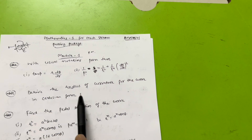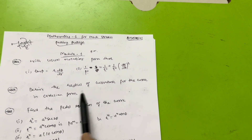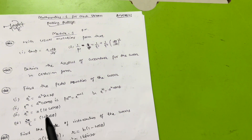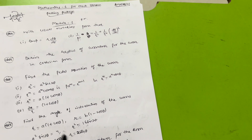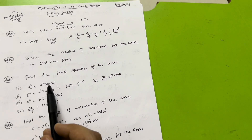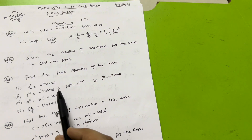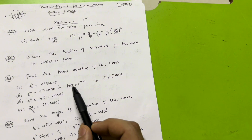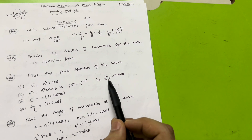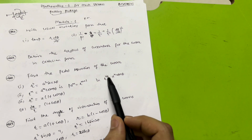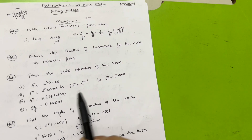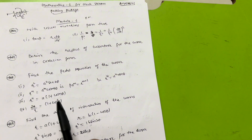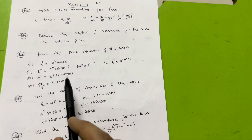Next important: derive the radius of curvature for the curve in Cartesian form. Next, we have the concept of pedal equations, on which you have to practice these four varieties: r² = a² sec 2θ, r^m = a^m cos(mθ) — show that the pedal equation is p·a^m = r^(m+1). Also find the pedal equation for r^n = a^n cos(nθ) and r^n = a(1 + cos nθ), and 2a/r = 1 + cos θ.